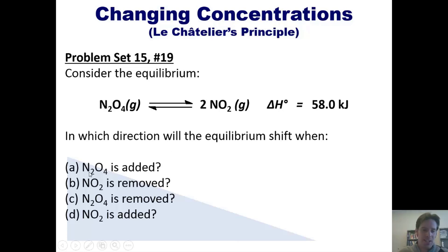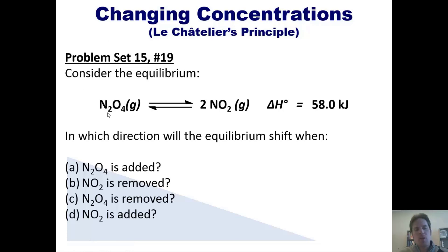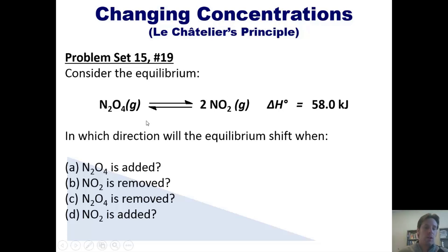Let's begin with part A. If I add N2O4, what happens? Well, I have a lot of N2O4 — in other words, the left side is heavy. I need to restore balance by removing N2O4 and forming NO2. So the equilibrium will shift to the right, removing N2O4 by converting it to NO2.